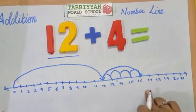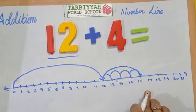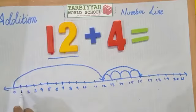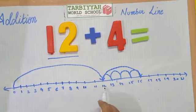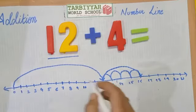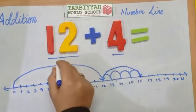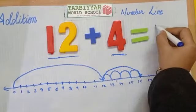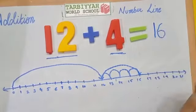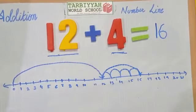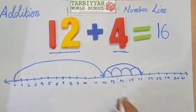So, the total number we have to calculate: 1, 2, 3, 4, 5, 6, 7, 8, 9, 10, 11, 12, 13, 14, 15, 16. So, 12 plus 4 is 16.